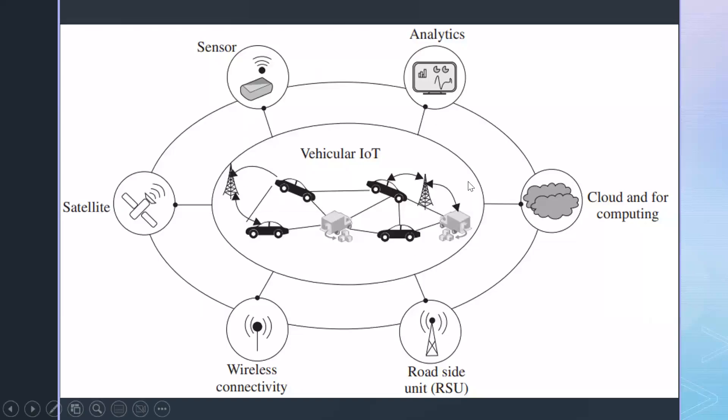These are the components of vehicular IoT: sensor, analytics, cloud and fog computing, RSU that is your roadside unit, wireless connectivity, and satellite. The sensor is sensing and satellite is through which the data are sent to the cloud. Through this data which is in the cloud, analytics can be made, and roadside units communicate with the sensor and tell you the status of the traffic.